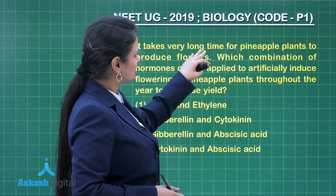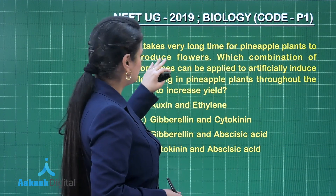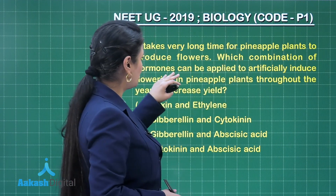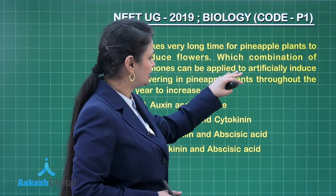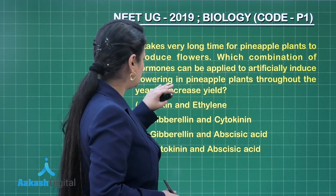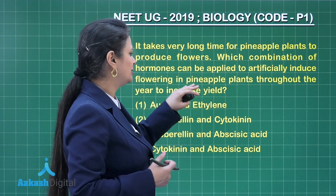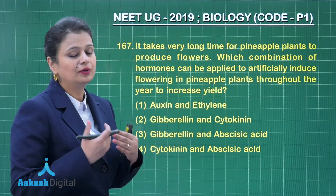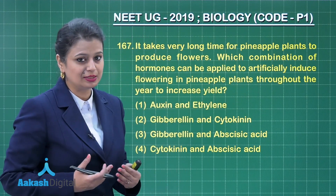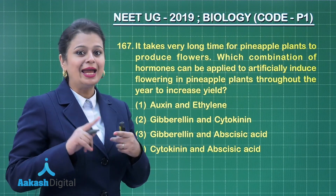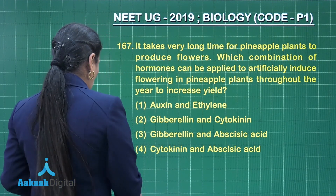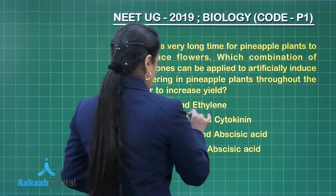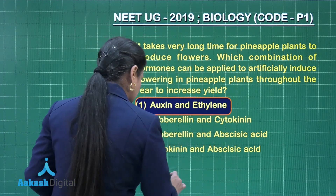It takes a very long time for pineapple plants to produce flowers. Which combination of hormones can be applied to artificially induce flowering in pineapple plants throughout the year to increase yield? This can be done by using auxin as well as ethylene. So option one is the right answer.